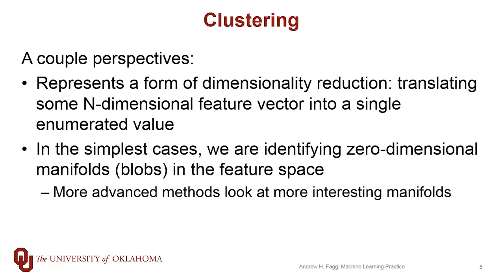In some sense, clustering really represents an extreme form of dimensionality reduction. We're taking some n-dimensional feature vector, where n can be quite large, and translating it into a single enumerated value. In the simplest approaches, we're identifying zero-dimensional manifolds — clusters where there is a cluster center, and we're projecting all of the points in the neighborhood onto that cluster center. We'll also talk about another method that allows us to handle more interesting kinds of manifolds, where the shape of the manifold is determined by the local structure of the data.